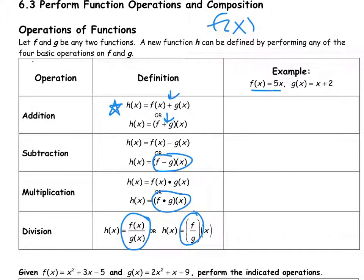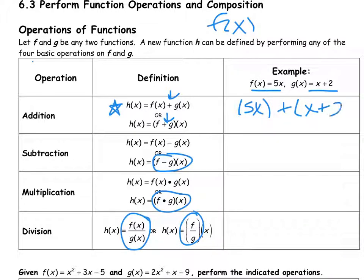So if I have f of x is 5x and g of x is x plus 2, then for addition I'm going to do 5x plus x plus 2. In this case I can combine like terms, so that gives me 6x plus 2.